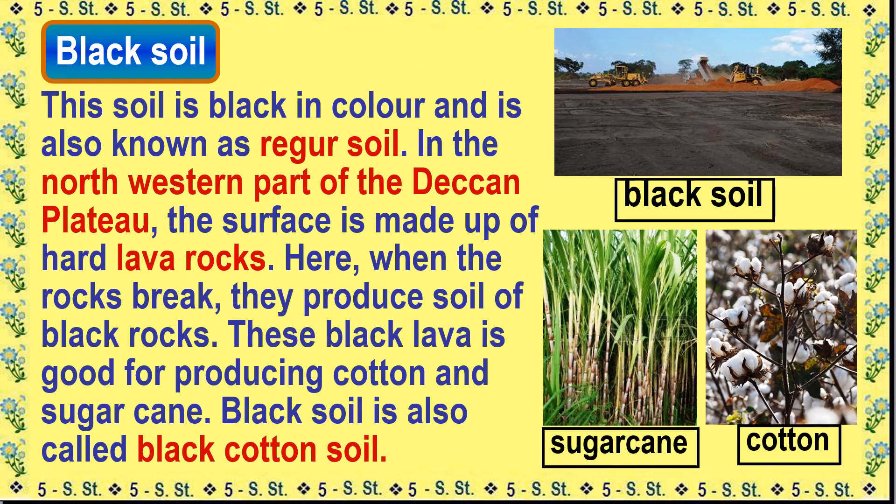Black soil is black in color and is also known as regur soil. In the northwestern part of the Deccan plateau, the surface is made up of hard lava rocks. When the rocks break, they produce black soil. This black lava soil is good for producing cotton and sugarcane, and is also called black cotton soil.